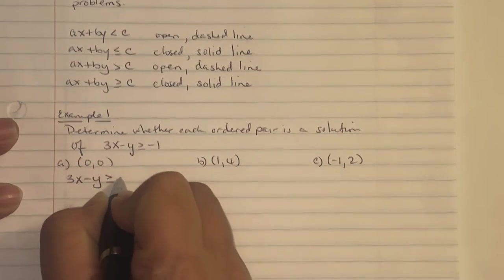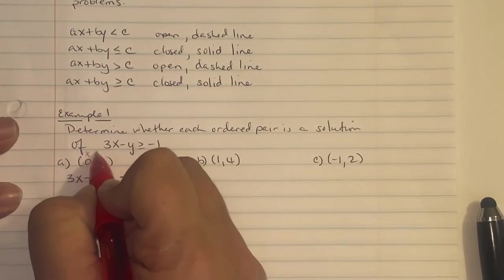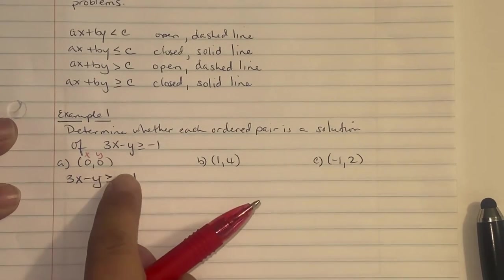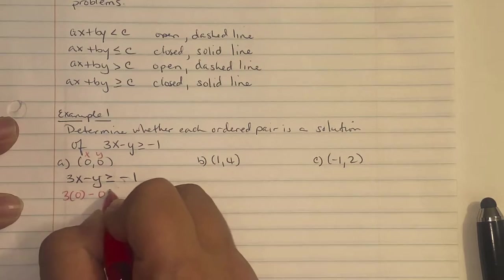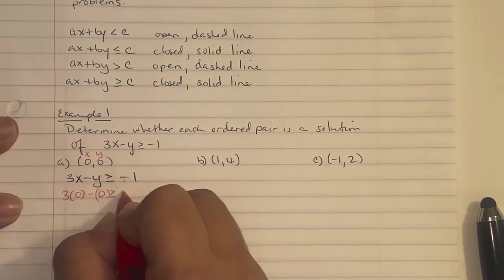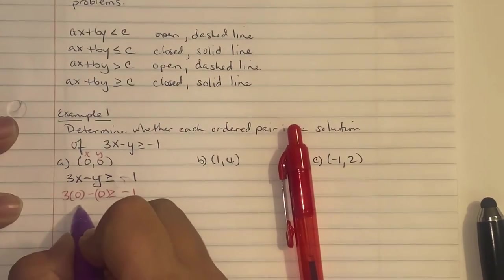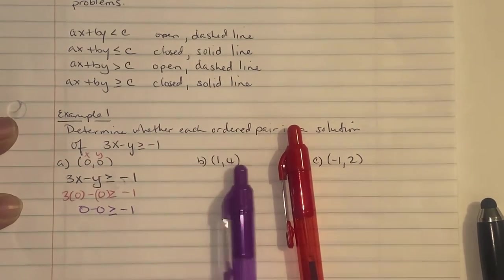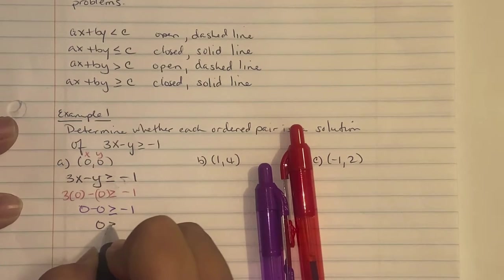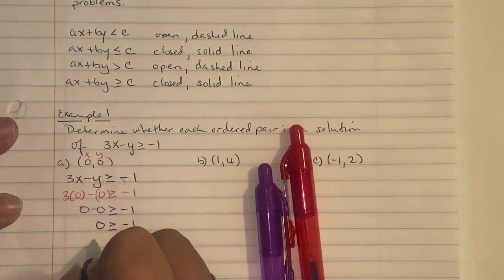For part A, we substitute in (0, 0) for X and Y. So 3 times 0 minus 0 is greater than or equal to negative 1. That gives us 0 minus 0, which is 0, greater than or equal to negative 1. It's asking if 0 is greater than or equal to negative 1. Well, 0 is greater than a negative number, so the answer is yes — we would use that ordered pair.